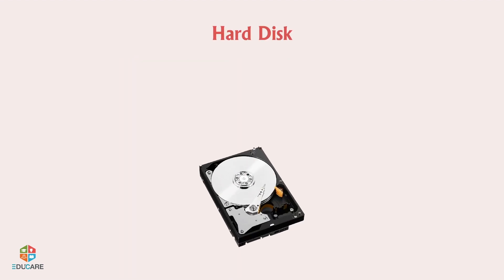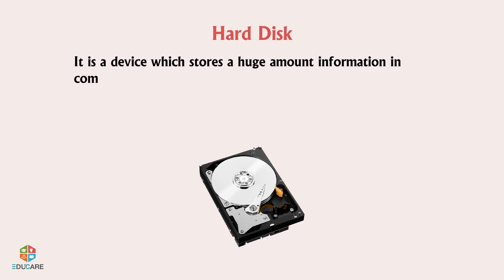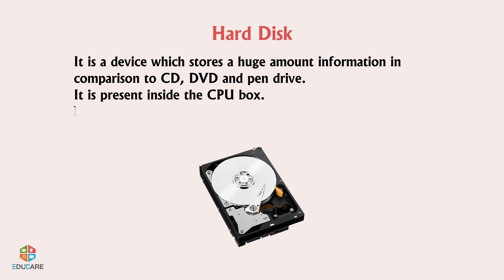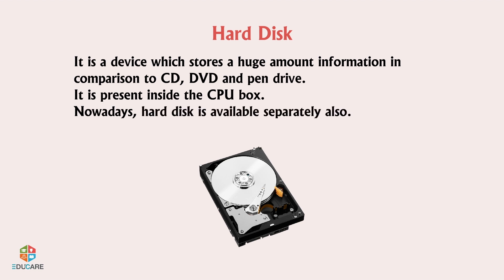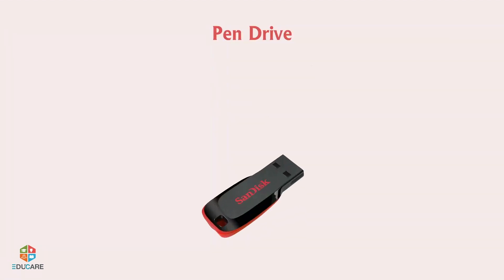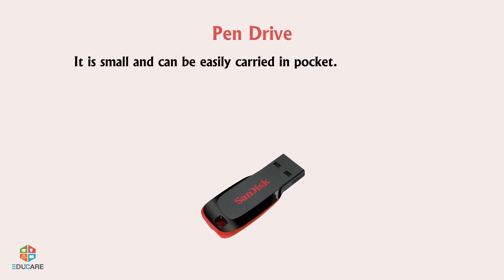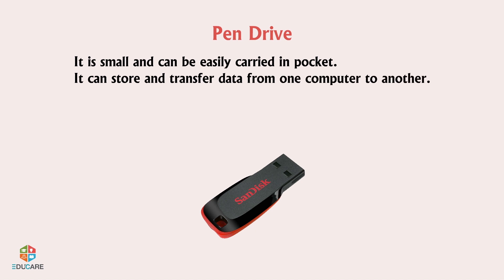Hard disk: It is a device which stores a huge amount of information in comparison to CD, DVD, and pen drive. It is present inside the CPU box, though nowadays hard disk is also available separately. Pen drive: It is small and can be easily carried in a pocket. It can store and transfer data from one computer to another, and it is rewritable.